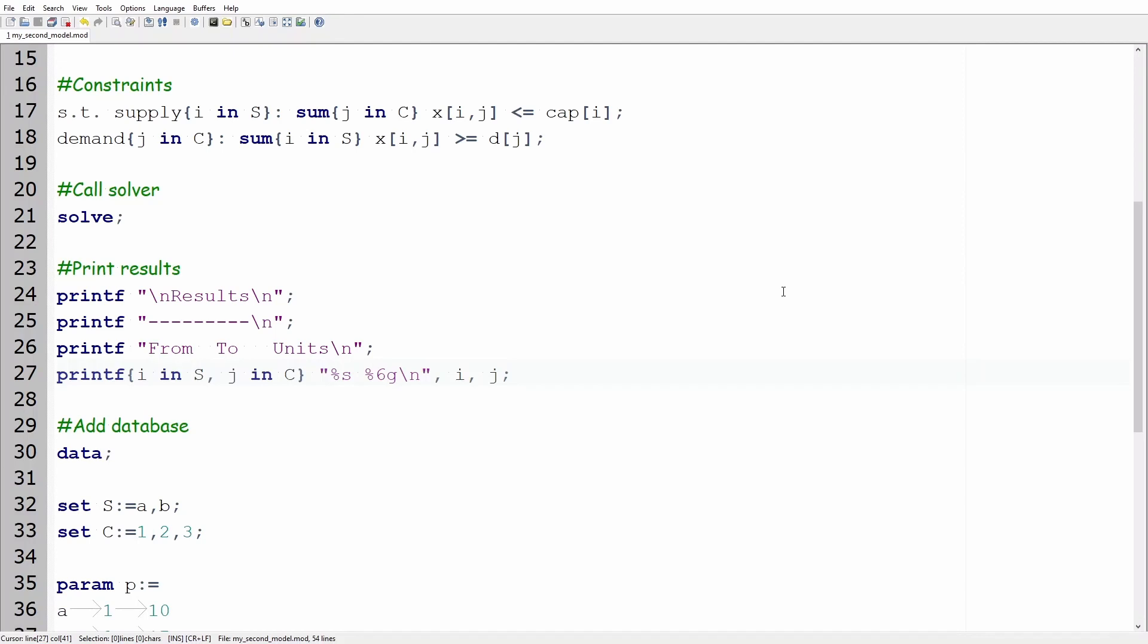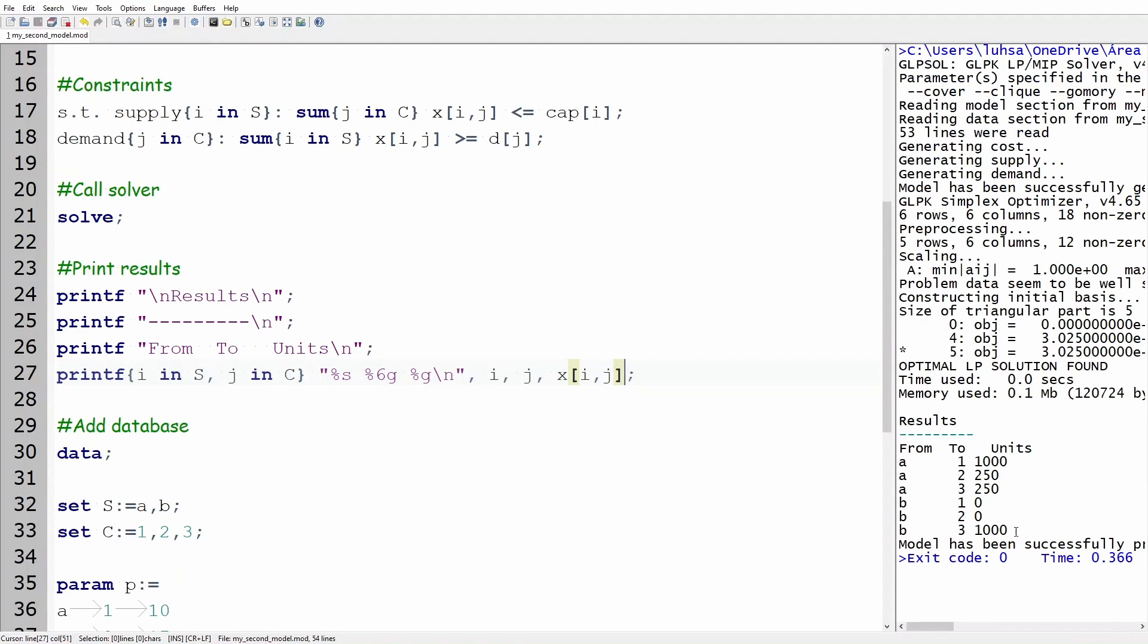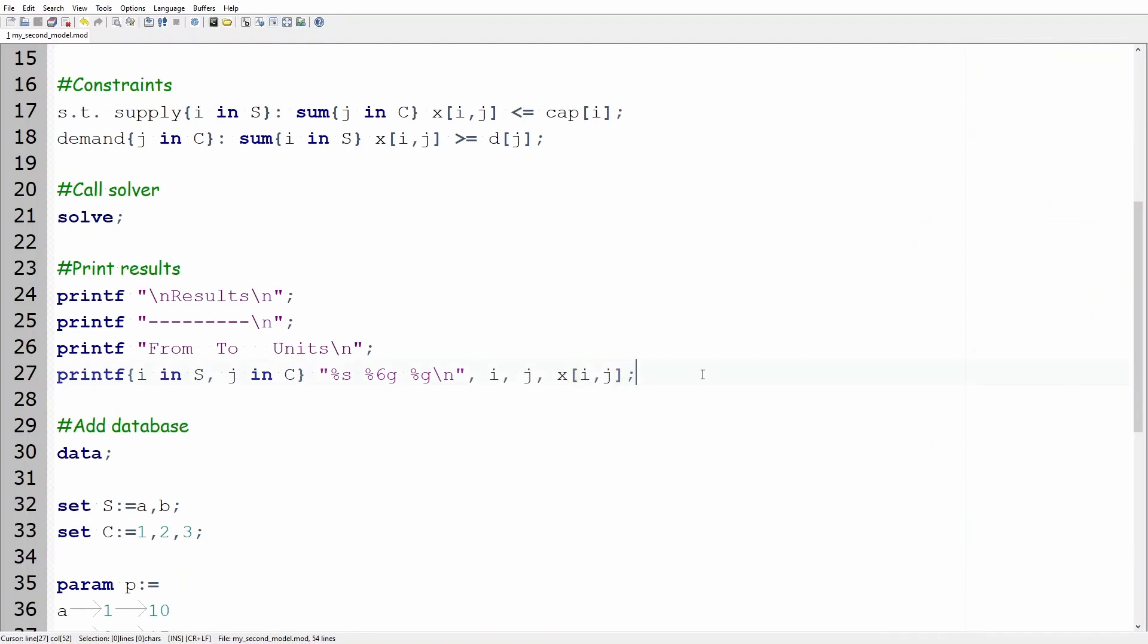The final column requires the number of units shipped from supplier i to customer j. Recall that this is the value of the decision variable x. Let's update the printf one more time. Type another %g inside the quotation marks and before the backslash n. Also add comma x brackets i j before the semicolon. As you can see the number of products is not under the column of units. Let's add the number 6 before both letters g and run the model. Great!